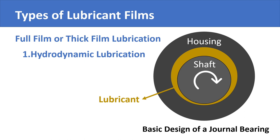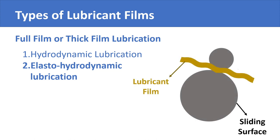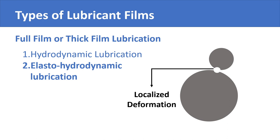However, there is another interesting type called elasto-hydrodynamic lubrication. In elasto-hydrodynamic lubrication, it is not the thickness of the film that separates the sliding surfaces — it is the elasticity of the material of the two parts that does that job. The rotation of parts creates pressure points that form localized microscopic deformation in the metal surfaces, which restores elastically once the pressure is removed. This deformation creates separation between the sliding surfaces.